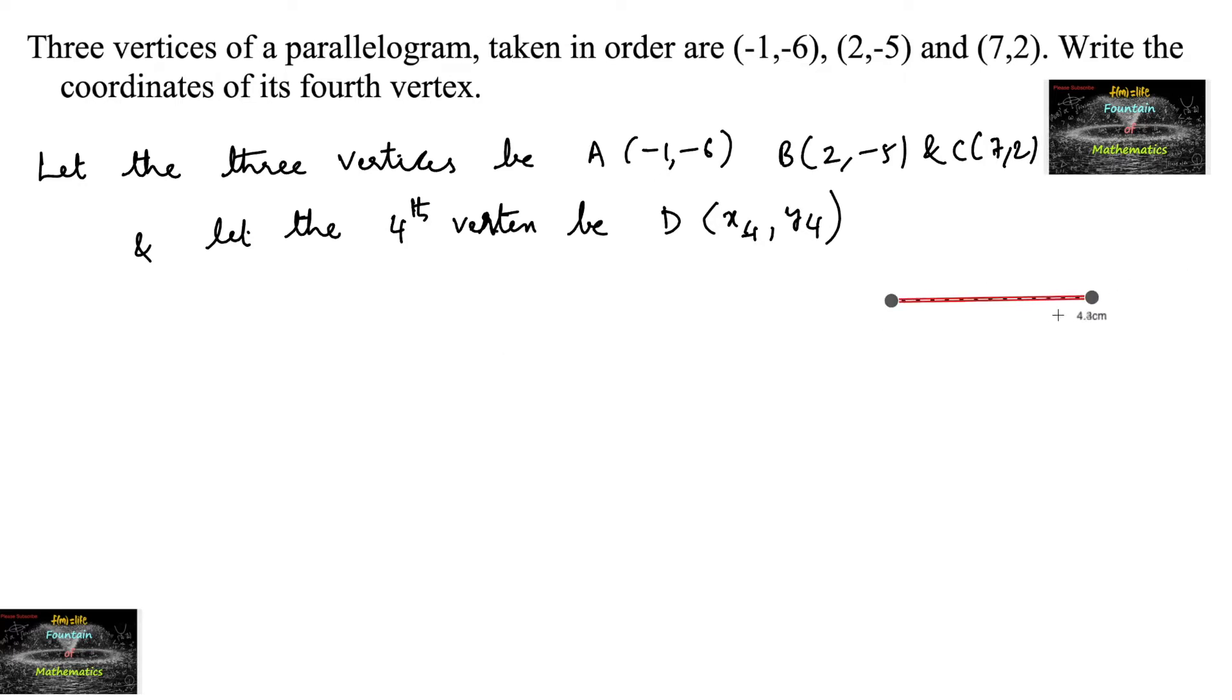Since we know that in a parallelogram, if (x₁,y₁), (x₂,y₂), and (x₃,y₃) are three vertices and the fourth vertex is (x₄,y₄), then we have a relationship between them.